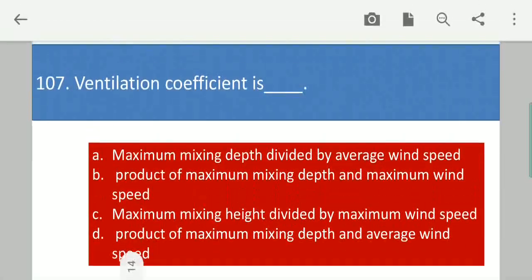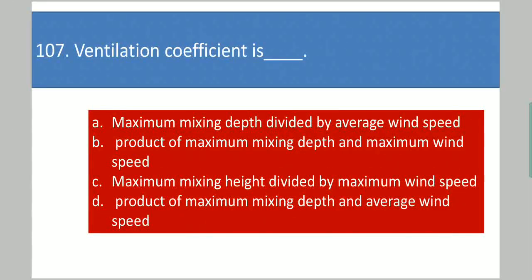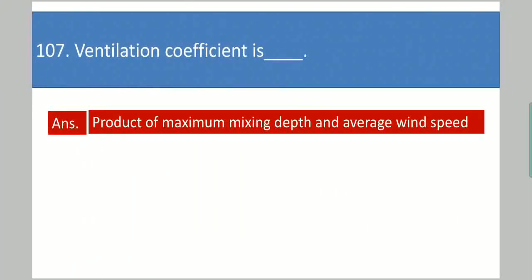Next question: Ventilation coefficient is dash. Your options are: maximum mixing depth divided by average wind speed; product of maximum mixing depth and maximum wind speed; maximum mixing height divided by maximum wind speed; product of maximum mixing depth and average wind speed. Your answer is product of maximum mixing depth and average wind speed.